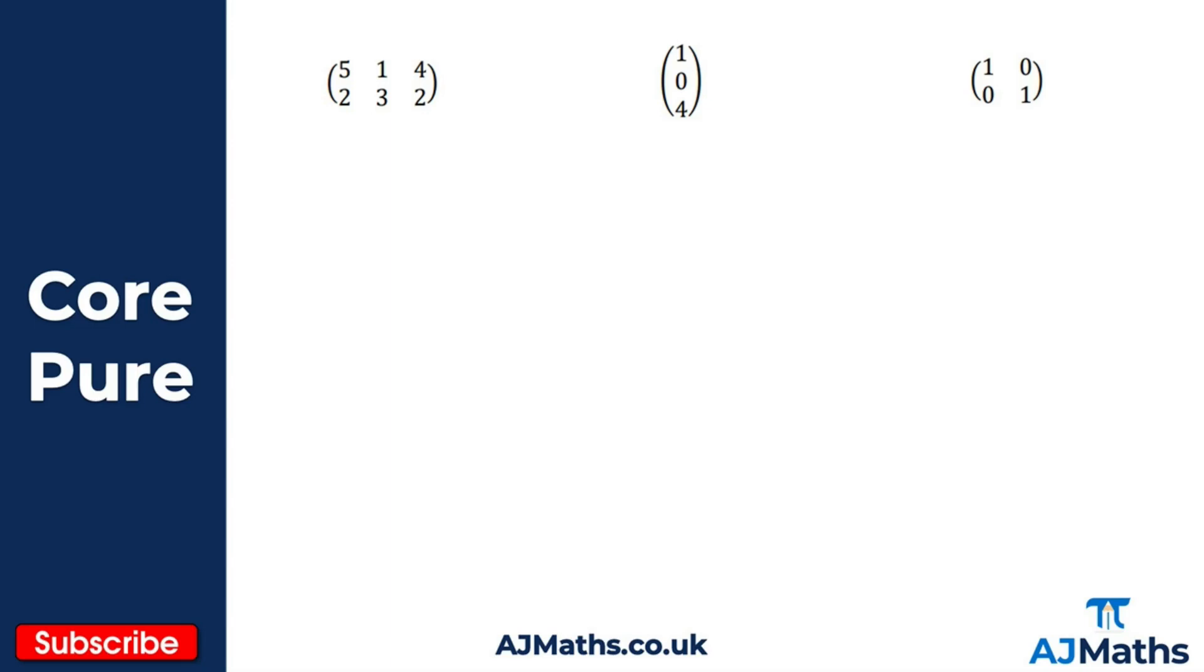Now when we give a matrix we arrange this by rows and columns, and the general form that we use here is an m by n matrix. So the m here represents the number of rows and the n represents the number of columns. Okay, so remember rows first then columns.